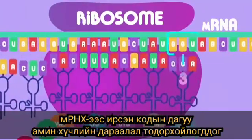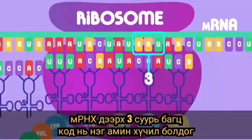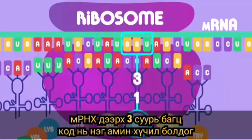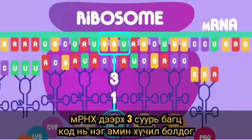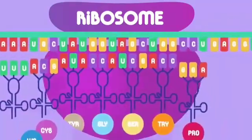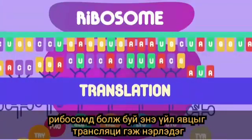Three base codons on the mRNA code for one amino acid. And this whole process in the ribosome is called translation.